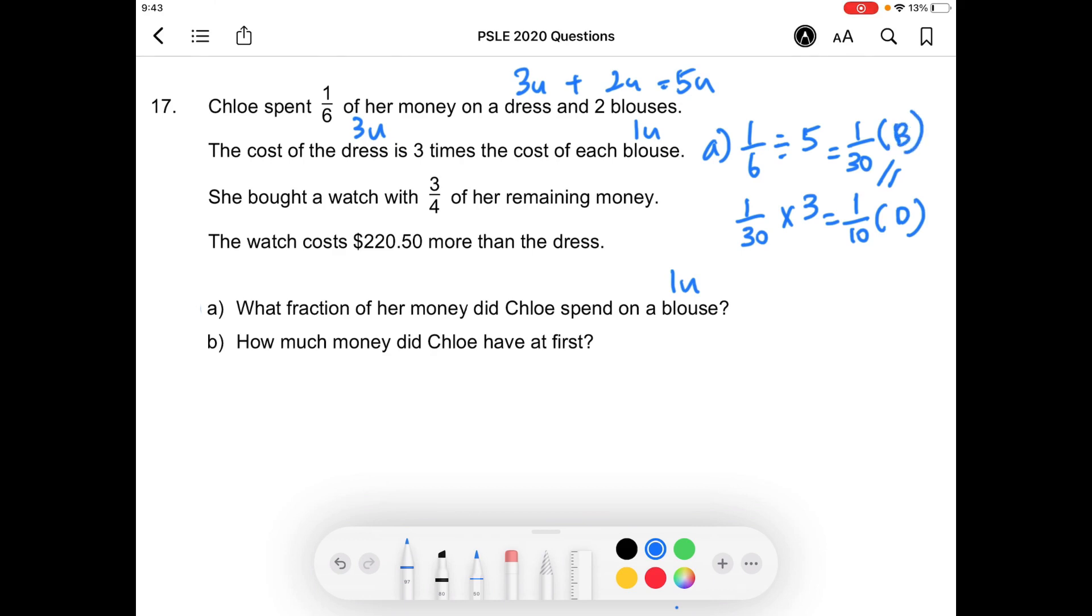Moving on, she bought a watch with three quarters of her remaining money. We can take three quarters times five over six, which is the remaining money, and we will get five over eight. This answer means that Chloe spent five over eight of all her money on a watch.